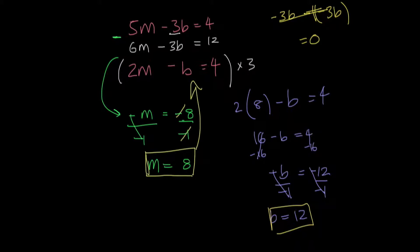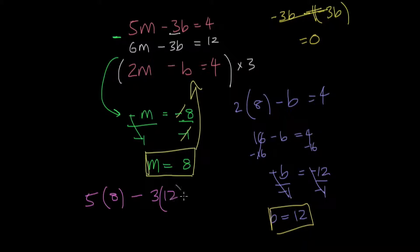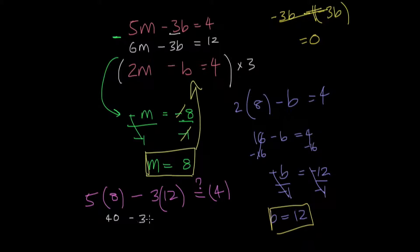I highly recommend that you always plug these values back into the equation and check if what you got is correct, because sometimes you may have made a calculation error. So I'm just going to plug these values into the first equation here. I have 5 times m, which is 8, minus 3 times 12, because b is 12. And if my answers are correct, I should get a value of 4. 8 times 5 is 40, minus 12 times 3 is 36. And this does give me 4. So my answer is correct.